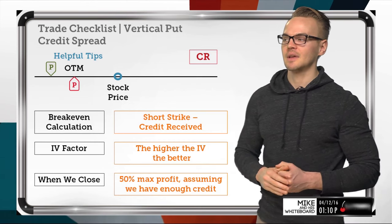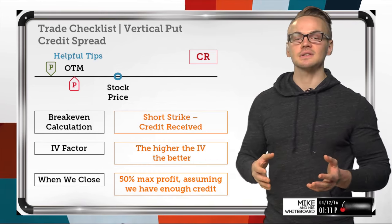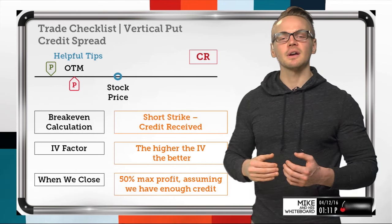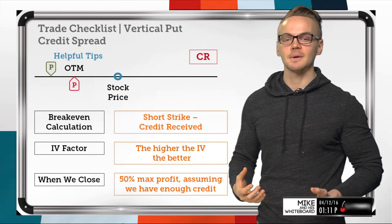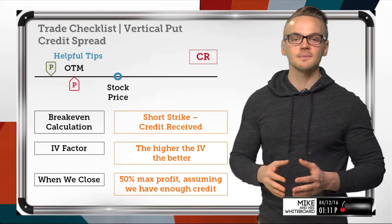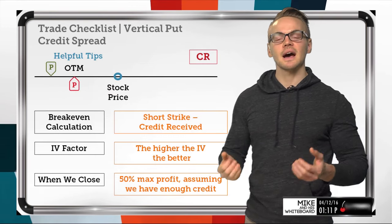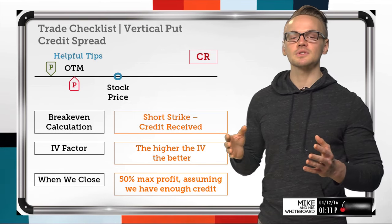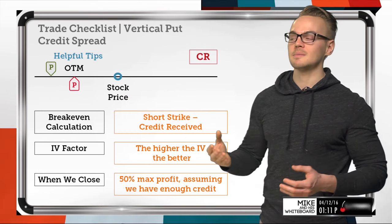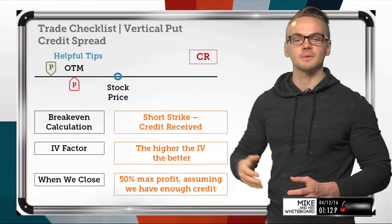Just like the naked short put, higher IV is better for this strategy. In a high IV environment, you can collect more premium at the same strikes compared to a low IV environment, or alternatively you can move your strikes much further out of the money and still collect a target credit like 50 cents. In a low IV environment, you'd have to move your strikes much closer to the stock price to collect that same amount.